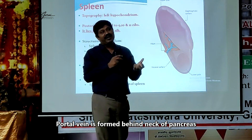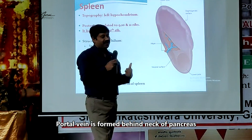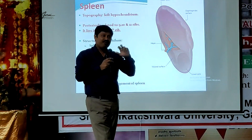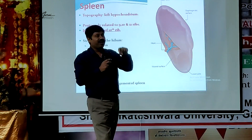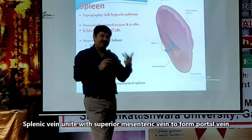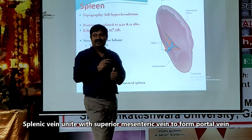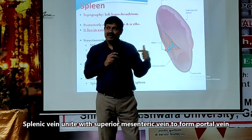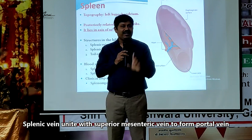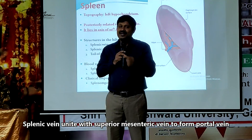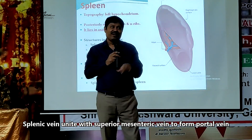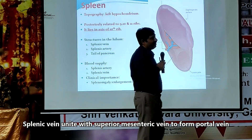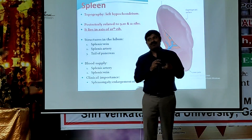The portal vein is formed behind the neck of the pancreas by the splenic vein joining with the superior mesenteric vein. So the splenic vein and the superior mesenteric vein join to form the portal vein. Either way, the key point is how the portal vein is formed.